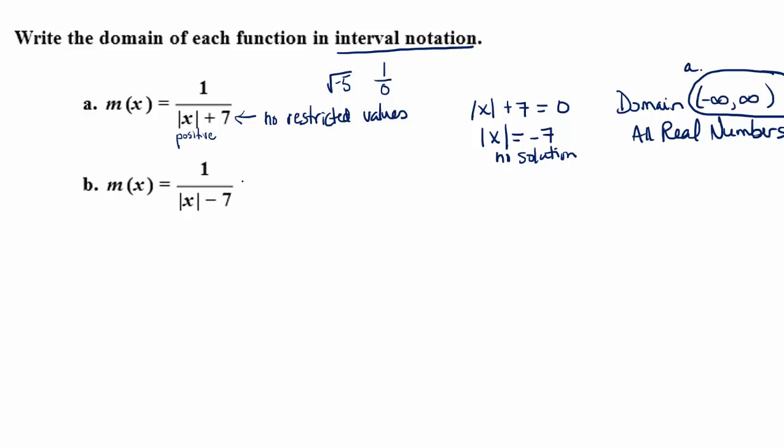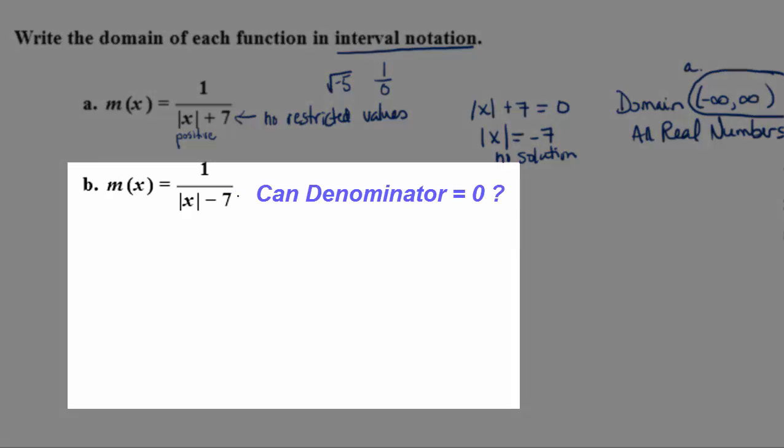Part b is a very similar function. Again, the only thing that can go wrong is if we were to plug in a number that would cause the denominator to equal zero.